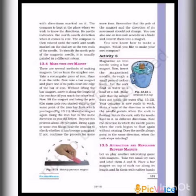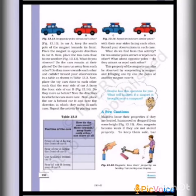Two toy cars labeled A and B. Place the bar magnet on top of each car, along its length, fixed with a rubber band. Refer Figure 13.13. In car A, keep the south pole of the magnet towards its front.